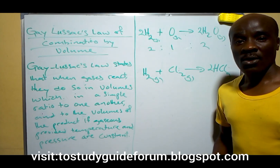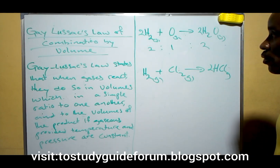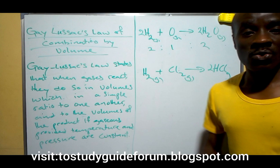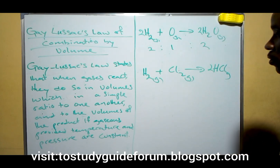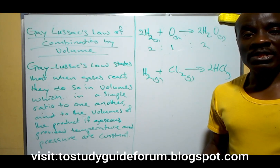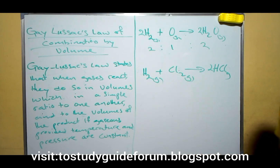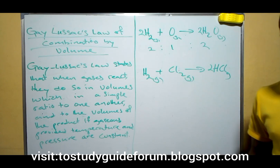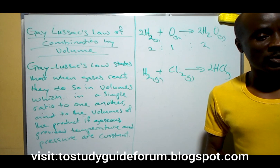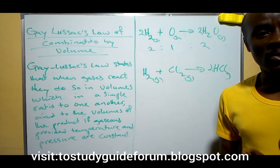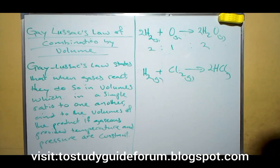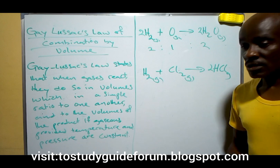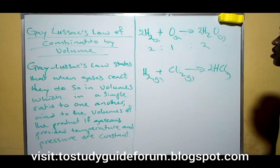So here we have Gay-Lussac's Law of Combination by Volume. This law states that when gases react, they do so in volumes which are in a simple ratio to one another and to the products, provided the temperature and pressure remain the same — in other words, at STP, at constant temperature and pressure.